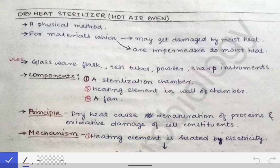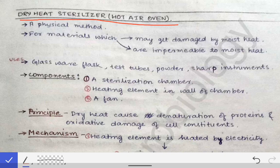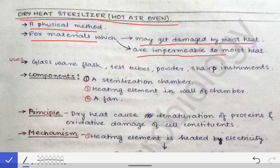We will talk about some individual sterilization techniques which are commonly asked in university exams. Among all the sterilization processes, the first is dry heat sterilization, also called the hot air oven. In introduction, this is a physical method which works on the concept of dry heat sterilization, and it is used for materials which may get damaged by moist heat and which are impermeable to moist heat.